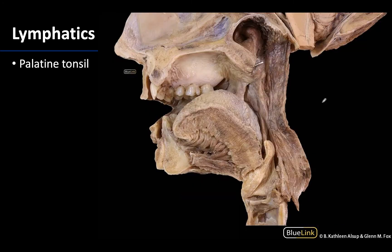Now this is typically also true of the palatine tonsils, which will atrophy with age. But in this particular donor, you see that there's actually a fairly robust palatine tonsil here and a more atrophied pharyngeal tonsil up here.